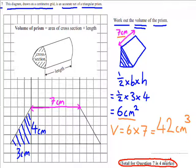Now question 7 is worth 4 marks. You get 1 mark for working out the area of the cross section, 1 mark for timesing it by the length, 1 mark for getting 42, and 1 mark for the units, centimeters cubed.